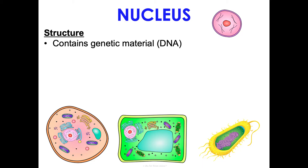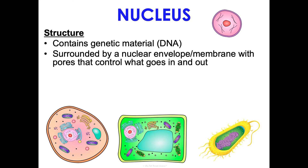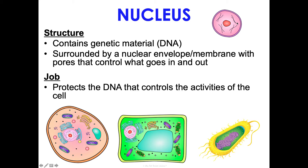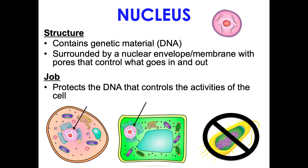The nucleus contains our genetic material, our DNA. It is surrounded by a nuclear envelope — also called the nuclear membrane — which has pores that control what goes in and out. Its job is to protect the DNA and control the activities of the cell. The nucleus is present in animal and plant cells but not in prokaryotic cells.